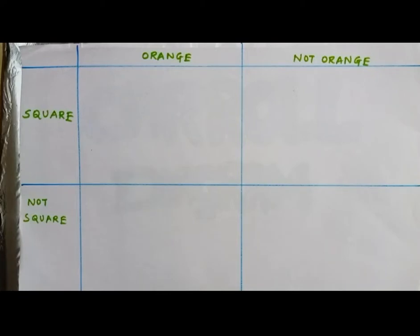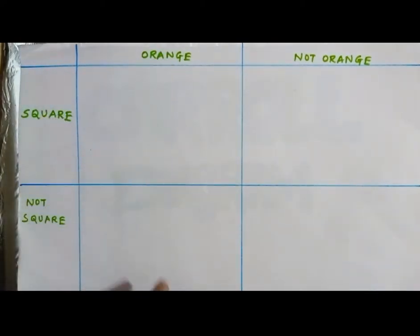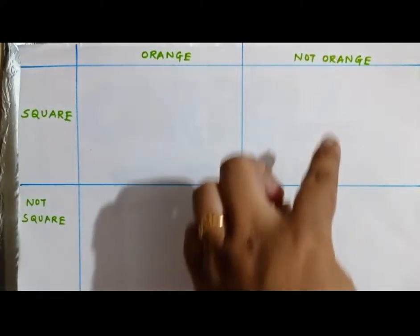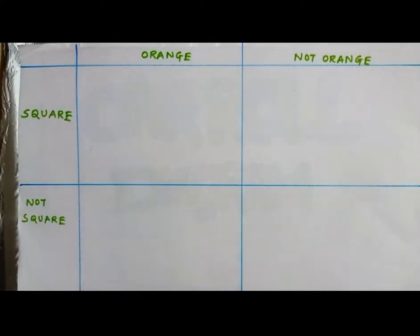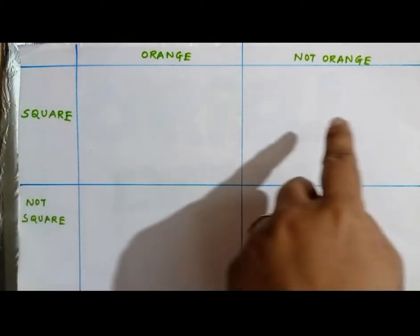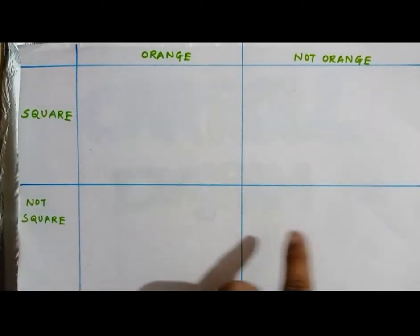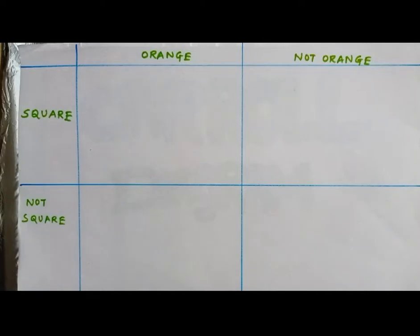For example, let us consider this table. In this, we have a column for orange, another column for not orange, a row for square, and another row for not square.